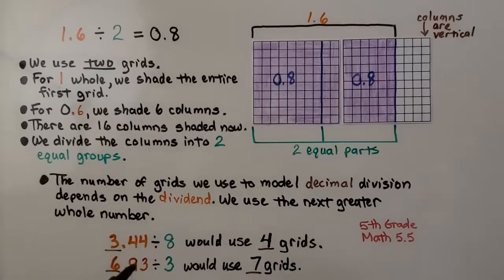If we have 6 and 93 hundredths, we're going to use 7 grids so we can put the 93 hundredths on the last grid. We just use the next greater whole number. Now, we learned this in 5th grade math 5.5. There will be a link in the description to that video if you're really rusty about this and need to know how to make the models for decimal division.